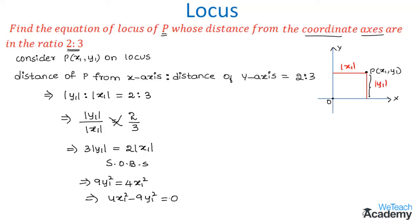So this is the equation satisfying the point P(x1, y1) on the locus. Therefore, we can conclude that the equation of locus of point P(x1, y1) is 4x² - 9y² = 0.